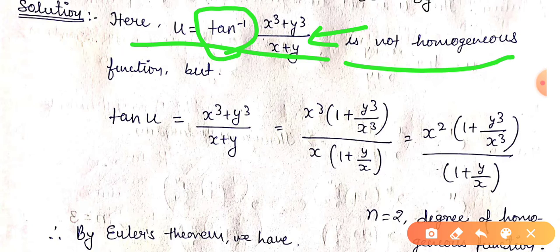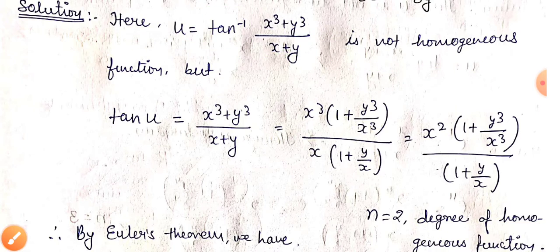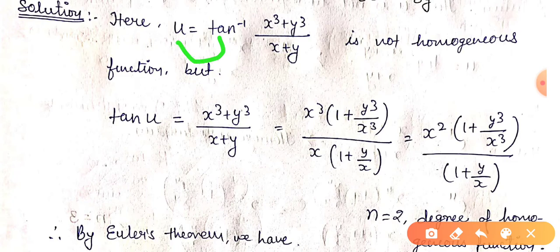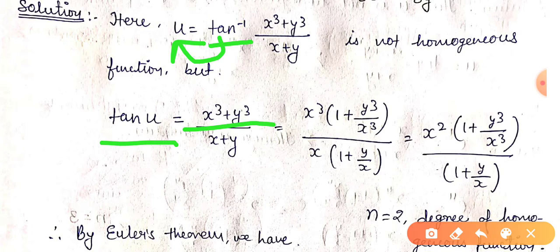As I explained in lecture number 12, what we do is replace and let tan(u) equal (x³ + y³) divided by (x + y). This substitution allows us to work with a homogeneous function directly.